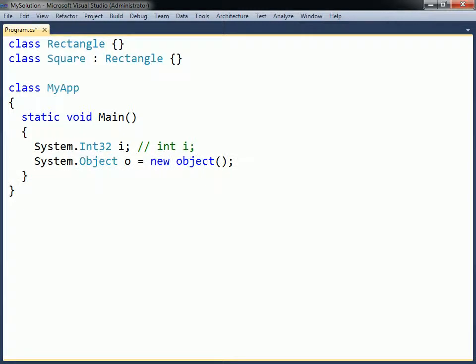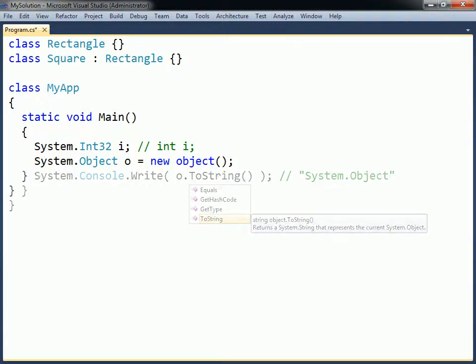Because all types inherit from Object, they all share a common set of methods. One such method is toString, which returns a string representation of the current object.